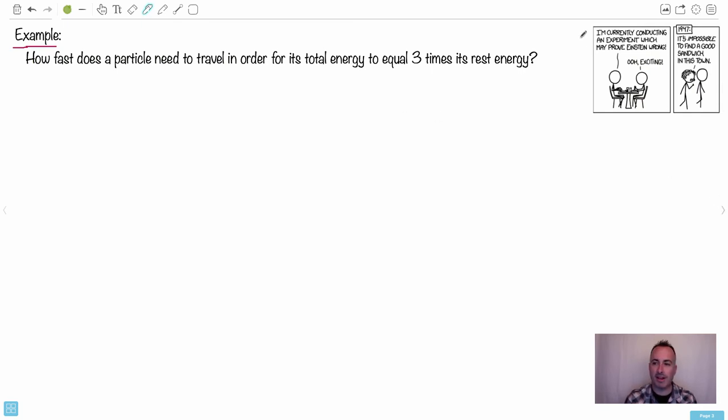Now, I've got an example for you. I have this little cartoon from XKCD. I like this one. So I'm currently conducting an experiment which may prove Einstein wrong. Ooh, exciting. In 47, he says, it's impossible to find a good sandwich in this town. Obviously, that's what he's trying to prove. Let's look at this. Groan.